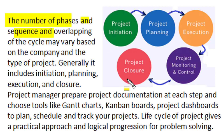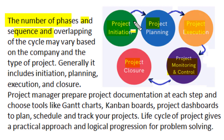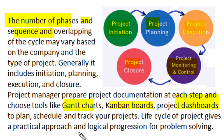But generally a project lifecycle includes first initiation, then project planning, project execution, and closure. In between, we need the monitoring and control of project activity at each stage. In each phase, the project manager has to prepare required documentation and will use specified management tools like Gantt charts, Kanban boards, or project dashboards to plan, schedule, and track the project on specified lines.